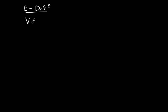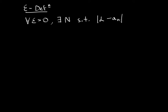For all epsilons greater than zero, there exists an N such that if you take the difference between the limit and the sequence, their difference would be less than epsilon for all little n's which exceed the big N.